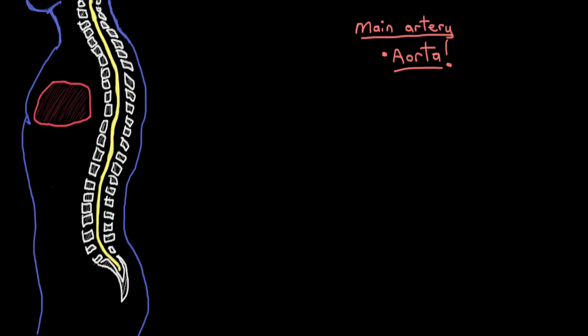So now let's look at where exactly the aorta is. This here is a side view of a guy, so we're looking at him from the side, and this type of view is called a sagittal view. I purposely chose this view so that I could easily show you the different regions of the aorta. The aorta stems off the top of the heart, and it arches up to about the upper chest area, then back downward again. It heads down behind the heart, sitting right in front of the spine — the vertebrae — all the way down to just below the belly button, where it splits into two other arteries, the iliac arteries.